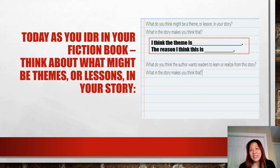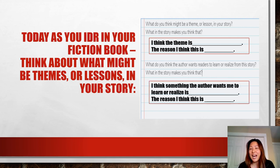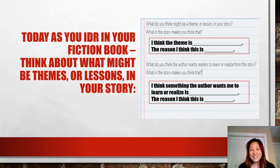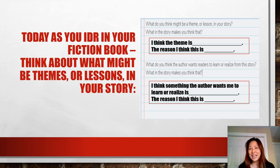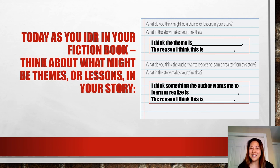The second part is: what do you think the author wants readers to learn or realize from this story? What in the story makes you think that? Another helpful sentence starter would be: 'I think something the author wants me to learn or realize is... and the reason I think this is...' When you give your reasons, that's the text evidence from the book that supports why you think that might be the theme. I hope you've enjoyed the time where we learned and talked about fables, visualizing, and looking for theme. I hope you enjoyed the text-to-text connection and the text-to-self connection in this lesson, and that as you IDR you'll practice really thinking about what the lesson or theme might be or what the author is trying to help you realize or learn.